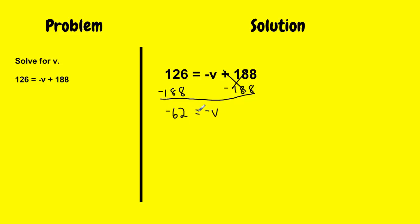And in this case, when you solve for a variable, if you're left with a negative value, then I can simply just do the opposite of each side. Opposite of a negative v is a positive v. And the opposite of a negative 62 is a positive 62. And then my equation is solved for the value of v. So v equals 62.